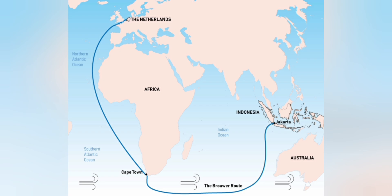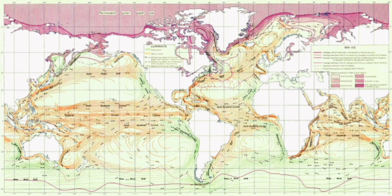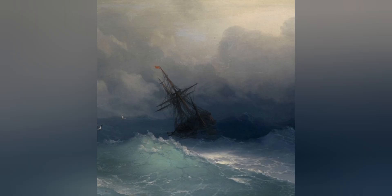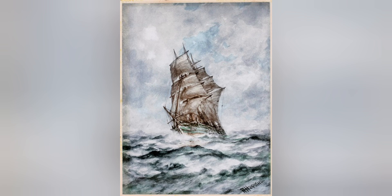The Dutch later fully circumvented the problem of the winds and currents of East Africa by using the Brewer route, where they used the westerlies and currents of the southern section of the Indian Oceanic Gyre to go across the southern section of the Indian Ocean and up to Indonesia. It was a dangerous strategy as they risked shipwrecking in Western Australia, but it was fast and efficient.